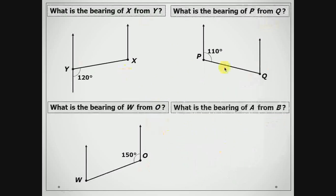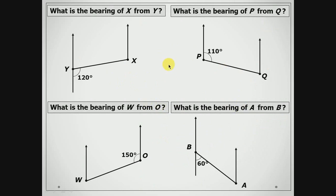Here are some questions that you can try on your own — feel free to pause the video and try. The first one: what is the bearing of X from Y? It means we are leaving from Y, measuring clockwise. Since these are angles on a straight line, the bearing of X from Y is 180 minus 120, which is 60 degrees.